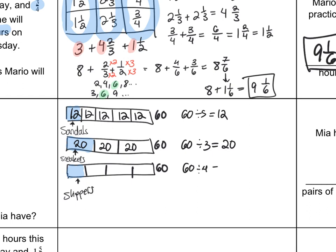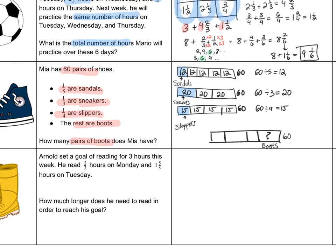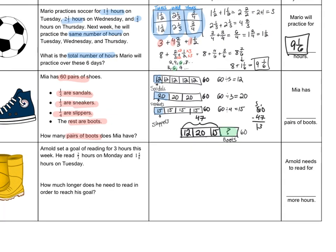Finally, sixty divided by four is fifteen, so she has fifteen pairs of slippers. So let me draw one more strip diagram down here, and again this one adds up to sixty. My first box is going to be my sandals, that's twelve, and then I have twenty pairs of sneakers for Mia, and fifteen pairs of slippers, and then the rest are boots. So I can clearly see now what I want to do if I want to figure out her boots. First I need to add twelve plus twenty plus fifteen, that's forty-seven, and then I need to do sixty minus forty-seven, and that's thirteen. So Mia has thirteen pairs of boots.